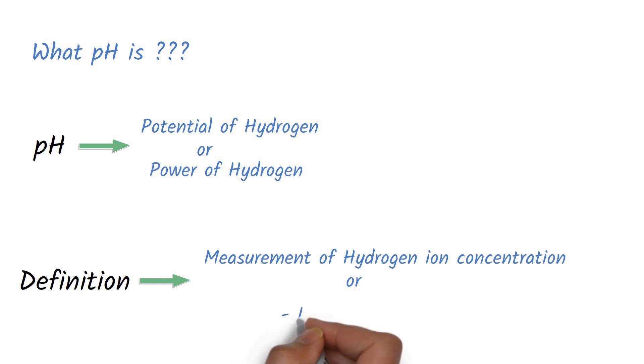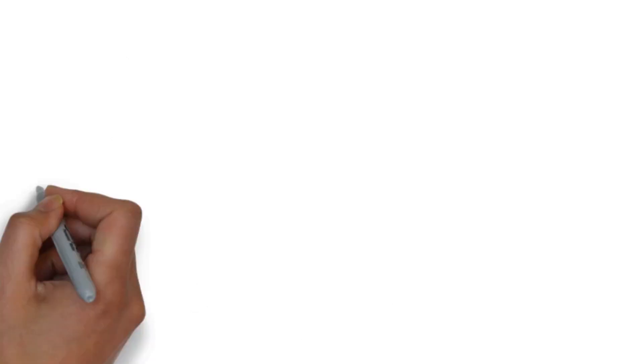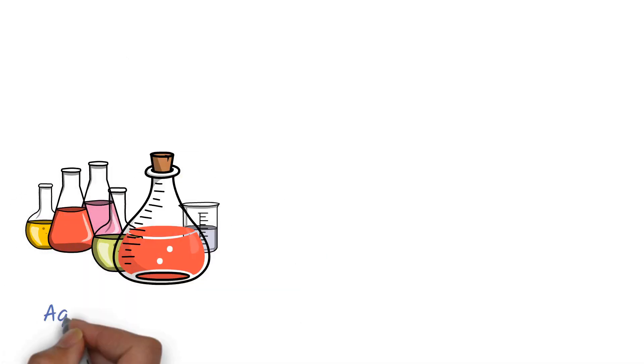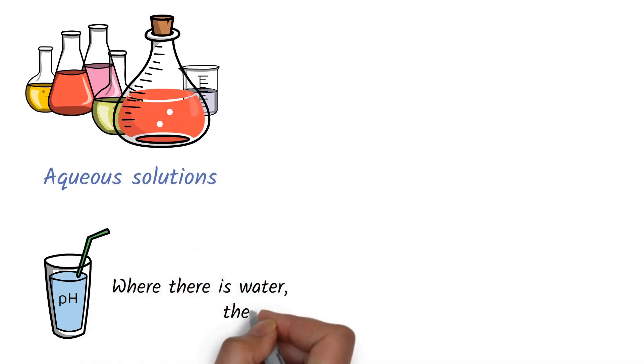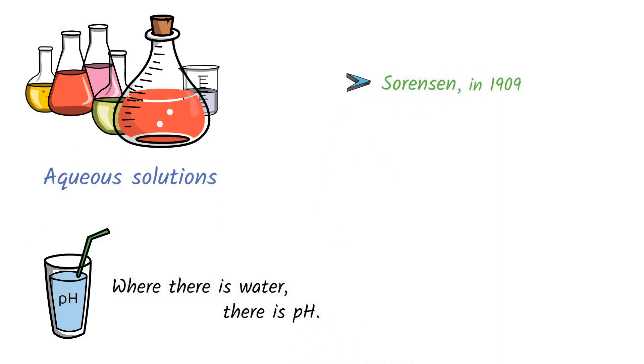Mathematically, it can be defined as negative logarithm of hydrogen ion concentration. This formula is used to calculate pH of any solution if we know the molar hydrogen ion concentration of that particular solution. Remember that pH is applied only to aqueous solutions. That means where there is water, there is pH. pH was first described by Sorensen in 1909.